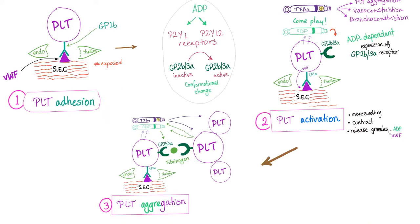Platelet plug in brief: platelet adhesion, platelet activation, platelet aggregation. First, the platelet adheres to the sub-endothelial collagen thanks to the GP1B receptor. Then platelet activation — the platelet starts going crazy and secretes two whistleblowers: thromboxane A2 and ADP. The ADP starts signaling to receptors called ADP-dependent expression of GP2B3A, and we have explained this in the previous video — this is the story of the P2Y12 receptor.